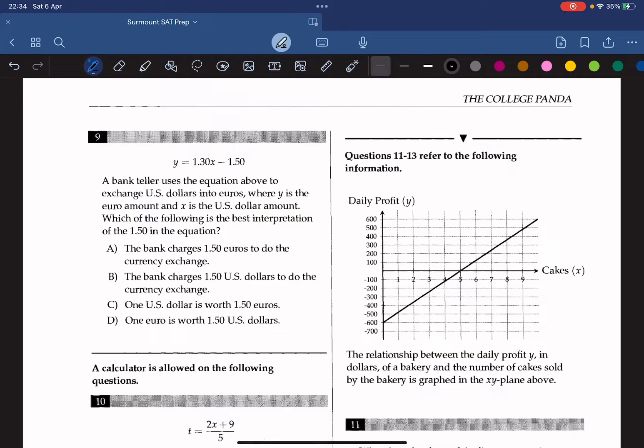Question 9: a bank teller uses the equation above to exchange US dollars into euros, where y is the euro amount and x is the dollar amount. Which of the following is the best interpretation of 1.5 in the equation? Since the slope is 1.3, it can be thought of as like an exchange rate, so like converting the dollars into euros. But after the conversion, we can see that 1.5 is subtracted away, which means that you are getting 1.5 euros less than what you actually should have been getting. So the best interpretation should be that the 1.5 is like the deduction or the fee that the bank charges you for the conversion. So the answer is A.